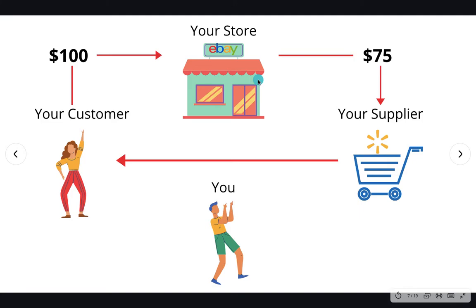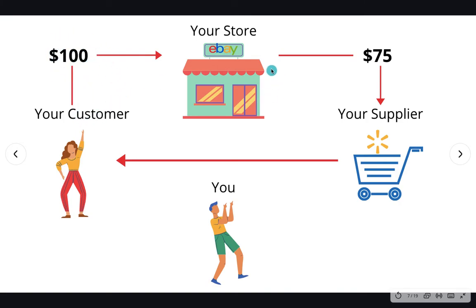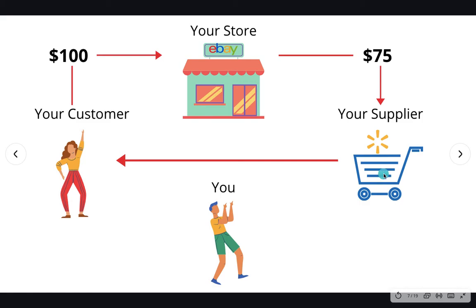Now, what you're going to do is grab the customer's information, because the moment the customer buys the bike from you, they give you their first and last name, their address, their cell phone number, and all the information you need to send them the product. So once the customer gives you $100, you're going to go to Walmart.com and buy the same bike with the customer's money — you don't need to use your own money. When you're checking out on Walmart, instead of putting your personal information, you're going to add the customer's information for the shipping.